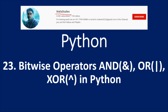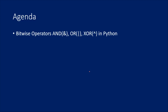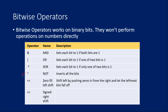Hi Friends! Welcome to WafaaStudy's YouTube channel. This is part 23 in the Python playlist. In this video we are going to discuss bitwise operators. We are going to exclusively look at AND, OR, and XOR operators in Python. There are also a couple of other operators under the bitwise category — NOT, left shift, and right shift — which we will see in our upcoming video. But this video is purely about AND, OR, and XOR operators.